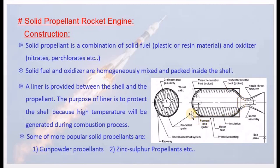In the construction of a solid propellant rocket engine, the outermost part is the shell. The shell forms the main casing of the engine.